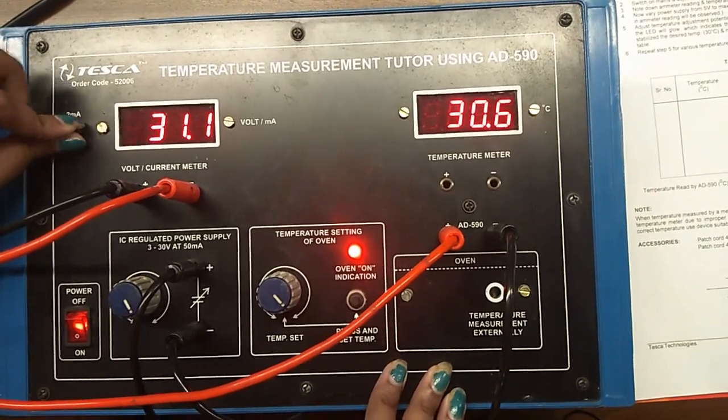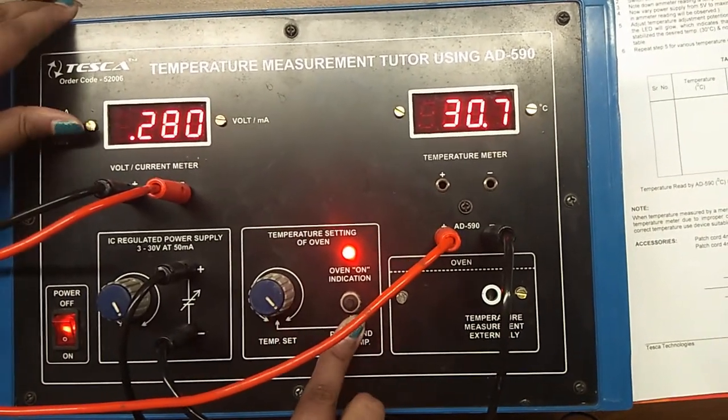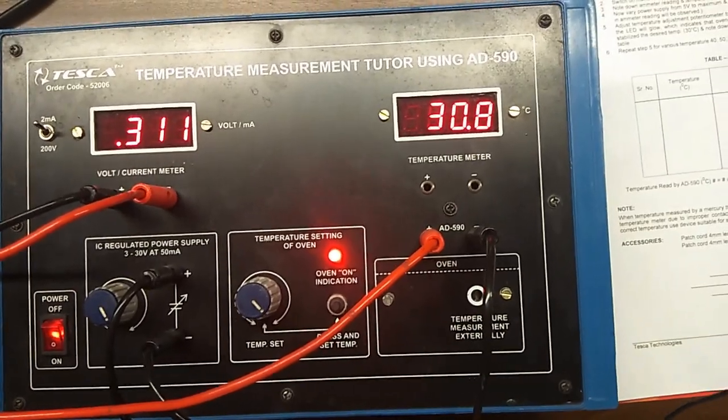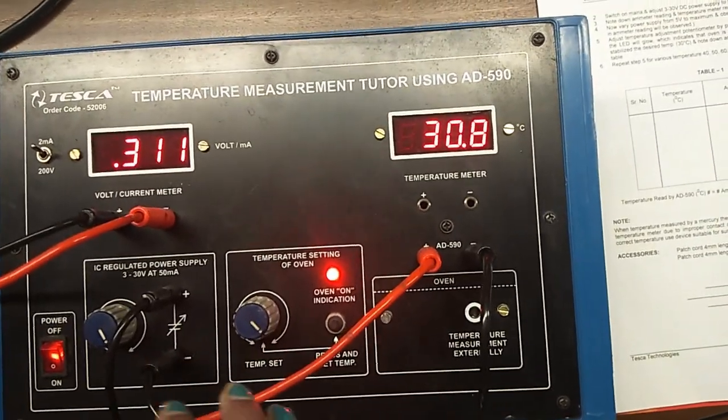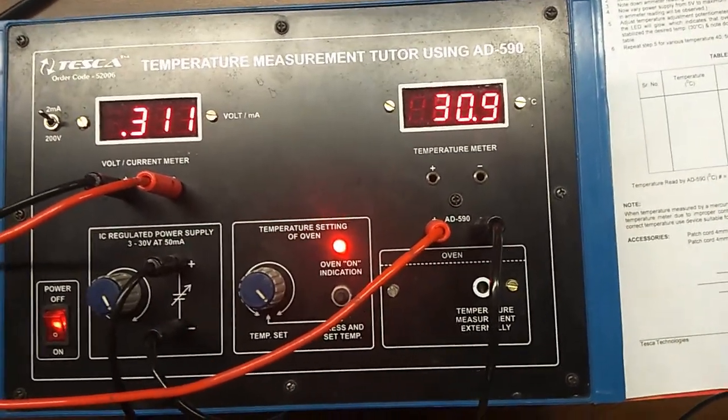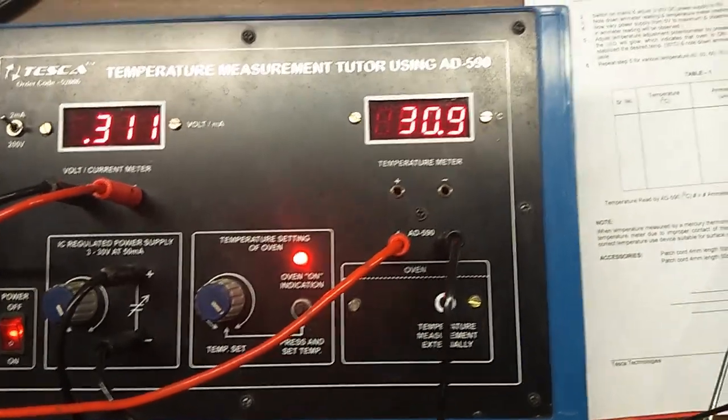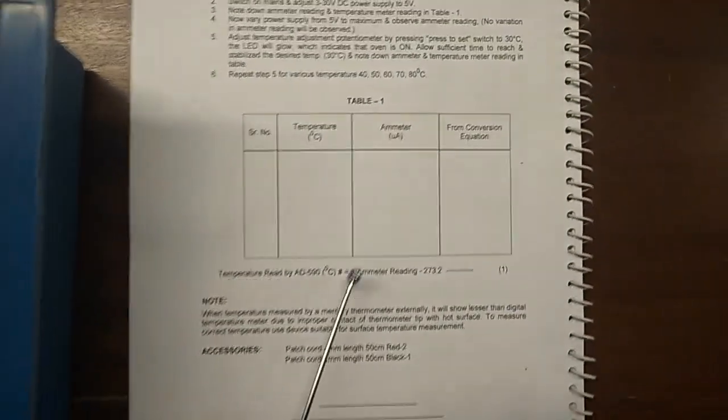Like this, set the temperature at various degrees like 40, 50, 60, 70, 80, and take the reading of the current. Note down those readings in the table given here.